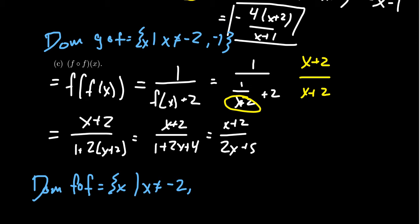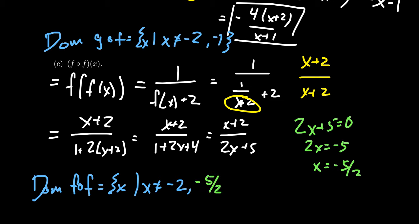What makes the denominator go to 0? Set 2x plus 5 equal to 0. Subtract 5 from both sides: 2x equals negative 5, so x equals negative 5 over 2. That makes the denominator go to 0, so negative 5 halves is forbidden from the domain. Combined with x not equal to negative 2, that gives us the full domain of f composed with f, and more practice computing composites of rational functions.